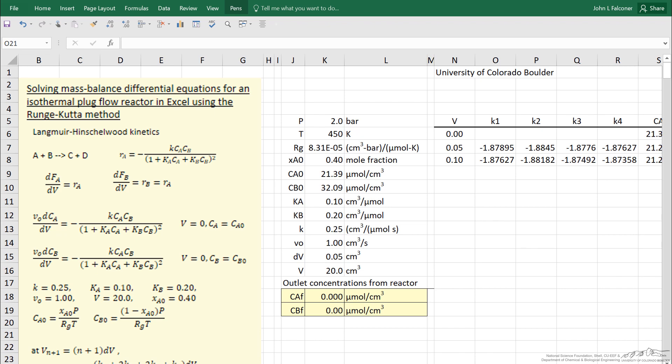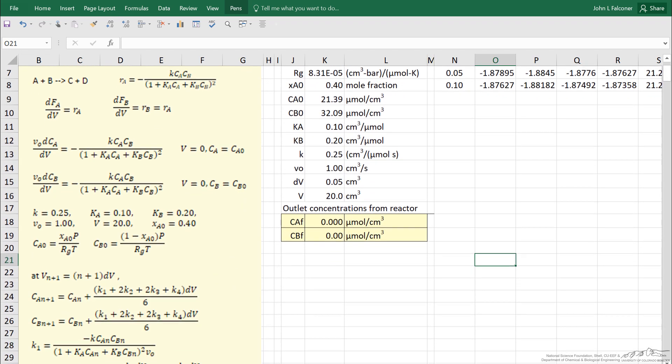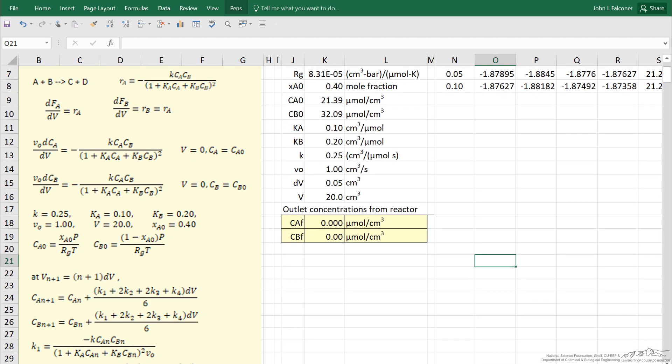But I want to simplify it as much as possible so we can see how to solve the differential equations in Excel. I've indicated on the left the values of constants, and used the ideal gas law to relate the concentration inlets CA0 in terms of the mole fraction entering and the pressure over the gas constant and temperature.